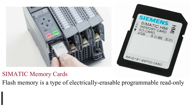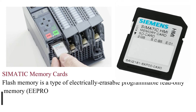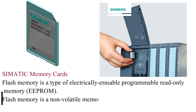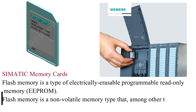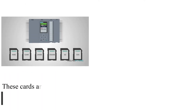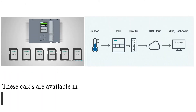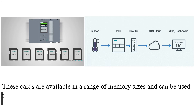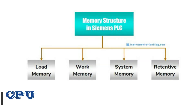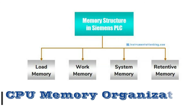Flash Memory and SIMATIC Memory Cards: Flash Memory is a type of electrically erasable programmable read-only memory. Flash Memory is a non-volatile memory type that, among other things, is used for SIMATIC memory cards. These cards are available in a range of memory sizes and can be used to store or transfer a PLC user program and associated data.